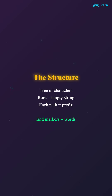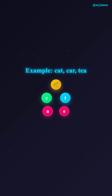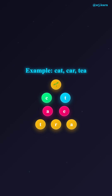Here's a simple example. Let's insert three words: cat, car, and tea. The root node has three children: C, D, and T. Under C, we have A. Under A, we have two children — T for cat, and R for car. Under the root's T, we have E, and under E we have A for tea. Notice how cat and car share the prefix CA.